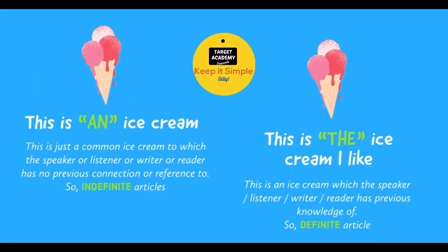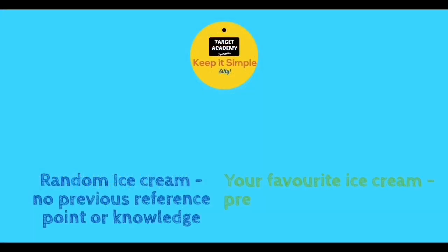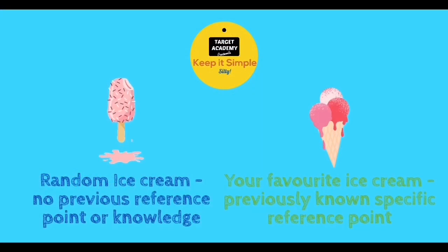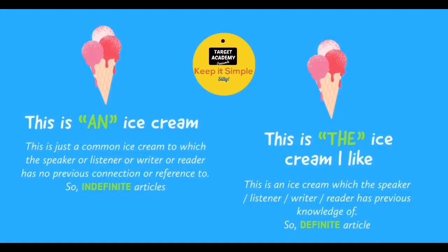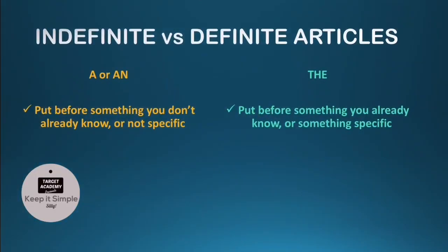Let's take another example. You know that something that looks a certain way is called an ice cream. So you say, 'This is an ice cream.' But if you say, 'This is the ice cream I like,' that means you are referring to that specific ice cream you prefer. The speaker and listener both have a prior connection to that ice cream — it's specific. And that is why the indefinite article changes to a definite article in this case.